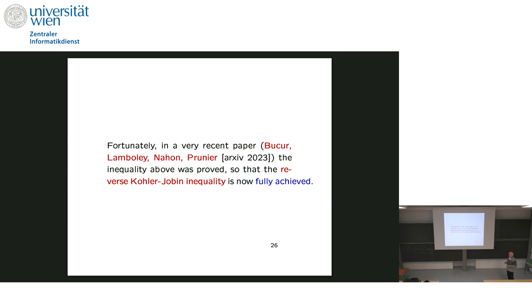The only remaining question is about the exponent Q_0. In the original Chiti-Jobin theorem, the threshold was 2/(d+2), fully precisely characterized. In the reverse Chiti-Jobin case, we now know there exists a threshold Q_1 above which the maximum is the ball, but Q_1 is not known precisely. Thank you very much.